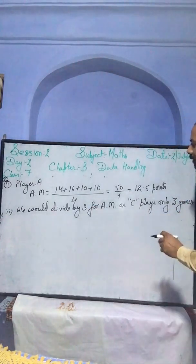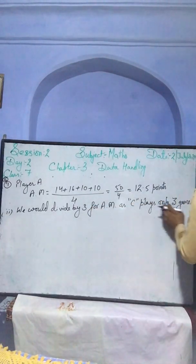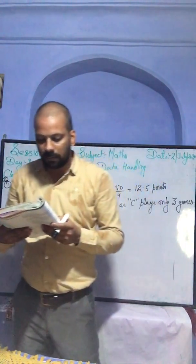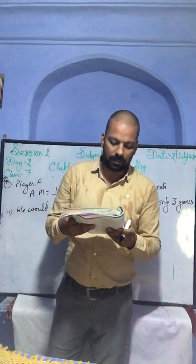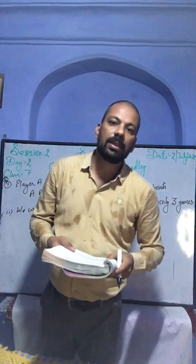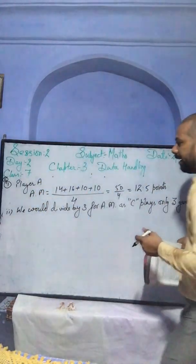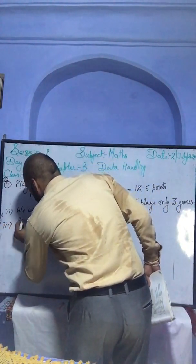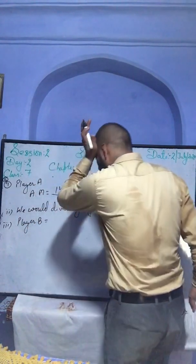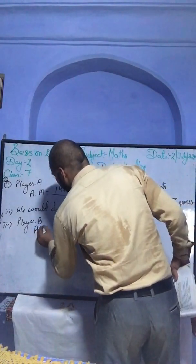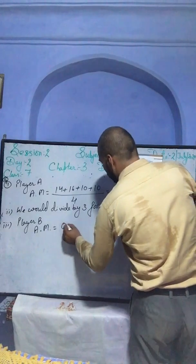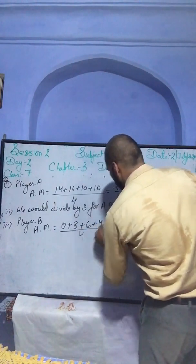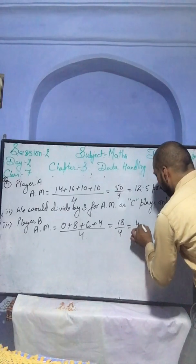We would divide by 3 for Player C's arithmetic mean because C played only 3 games. Now question 3: Player B played all four games. Player B's arithmetic mean = (0 + 8 + 6 + 4) divided by 4 = 18 divided by 4 = 4.5 points.